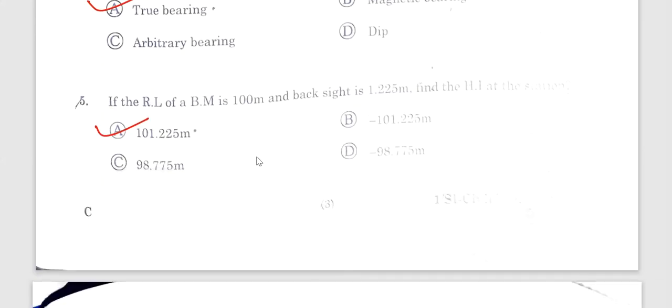RL is 100 and backside is. RL plus backside is nothing but height of the instrument of the station, right? 100 plus 1.225, you will get 101.225 meter.